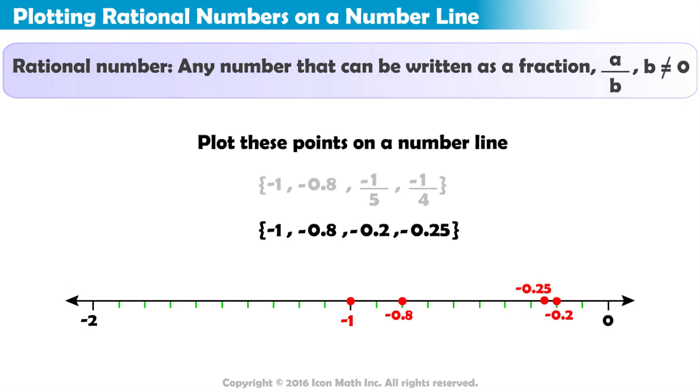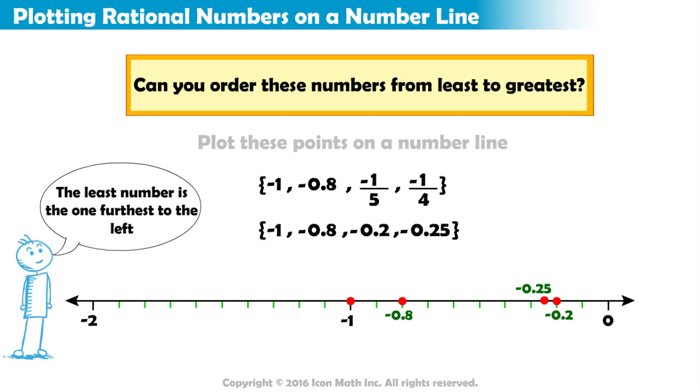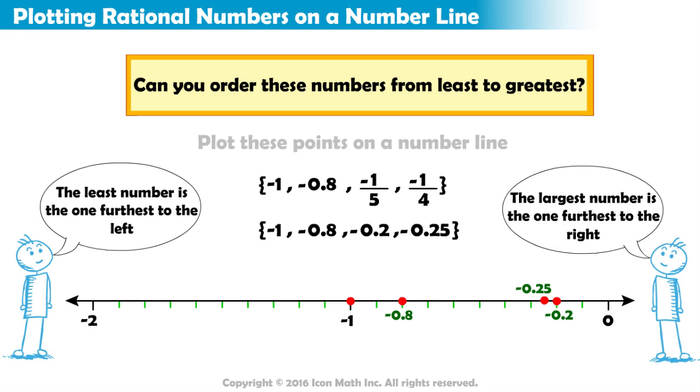Now that we've plotted each point on the number line, do you think you can order these numbers from least to greatest? The smallest or least number is the one furthest to the left. The largest number is the one furthest to the right. Ordered from least to greatest,